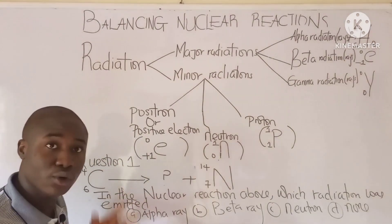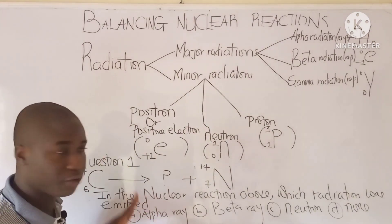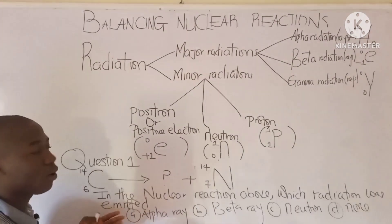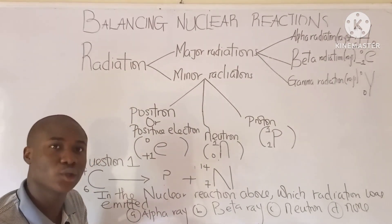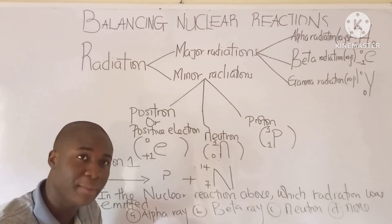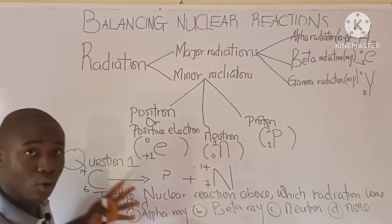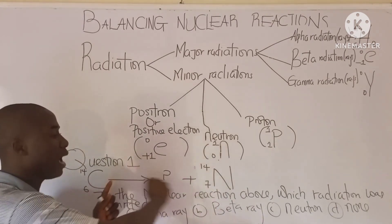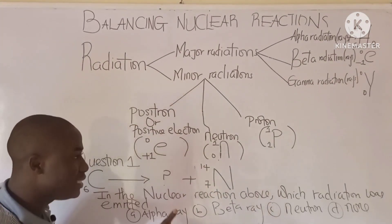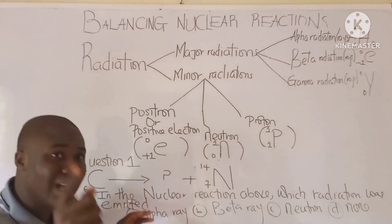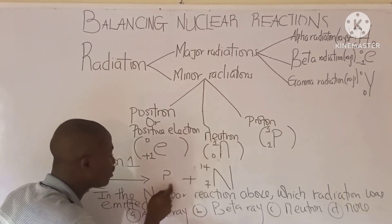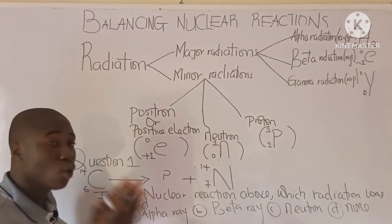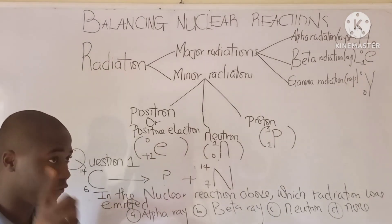You can see the first question written on the board. These types of reactions are called nuclear reactions, which are different from chemical reactions. In the nuclear reaction above, which radiation was emitted? They are asking us to determine which radiation should be in the position of the question mark.